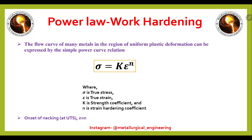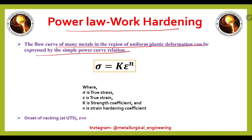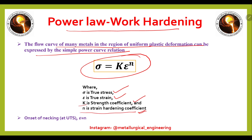Now we will see the power law work hardening. The flow curve of many metals in the region of uniform plastic deformation can be expressed by a simple power curve relation: sigma = K·epsilon^n, where sigma is the true stress, epsilon is the true strain, K is the strength coefficient, and n is the strain hardening coefficient.